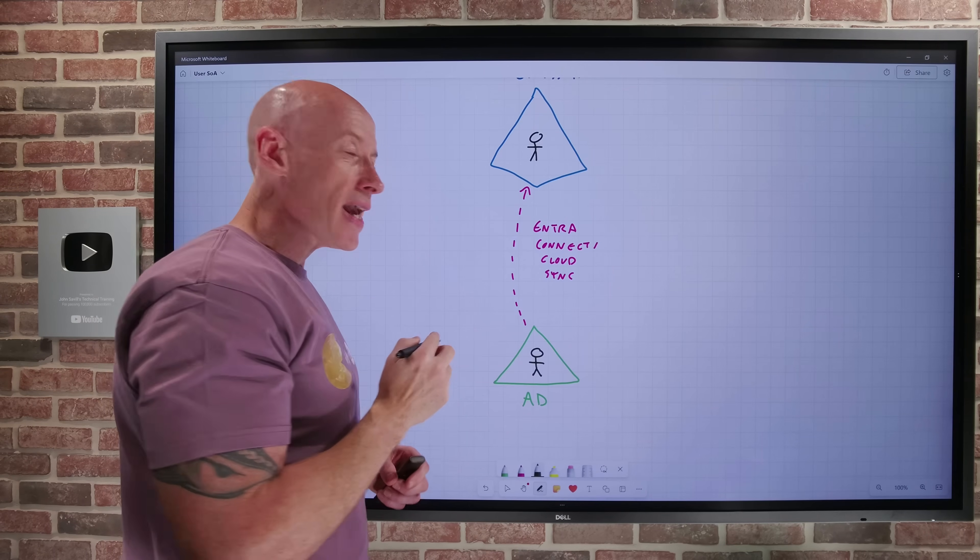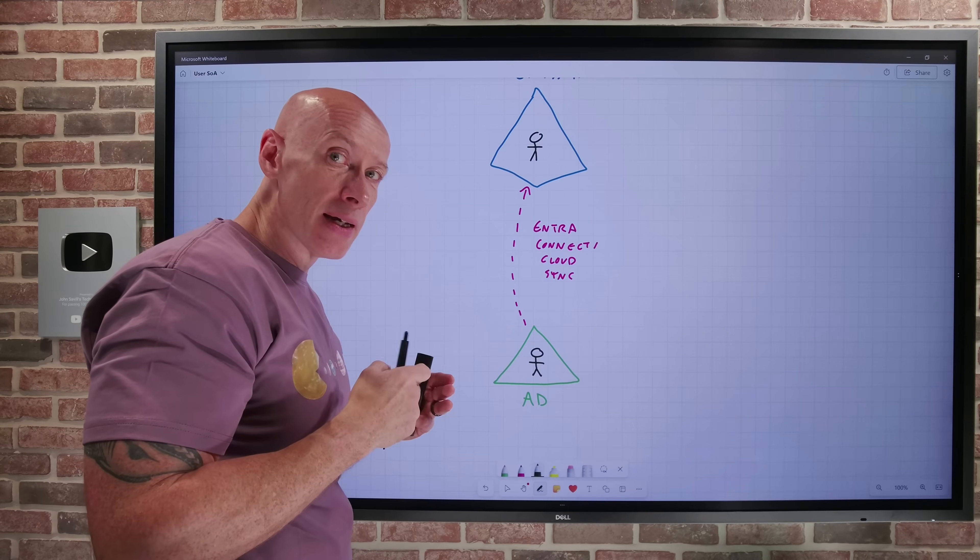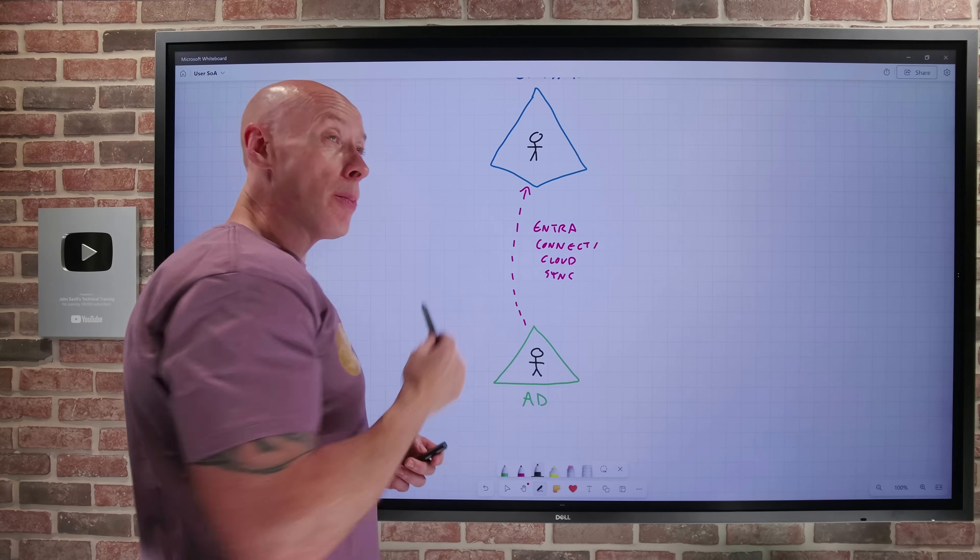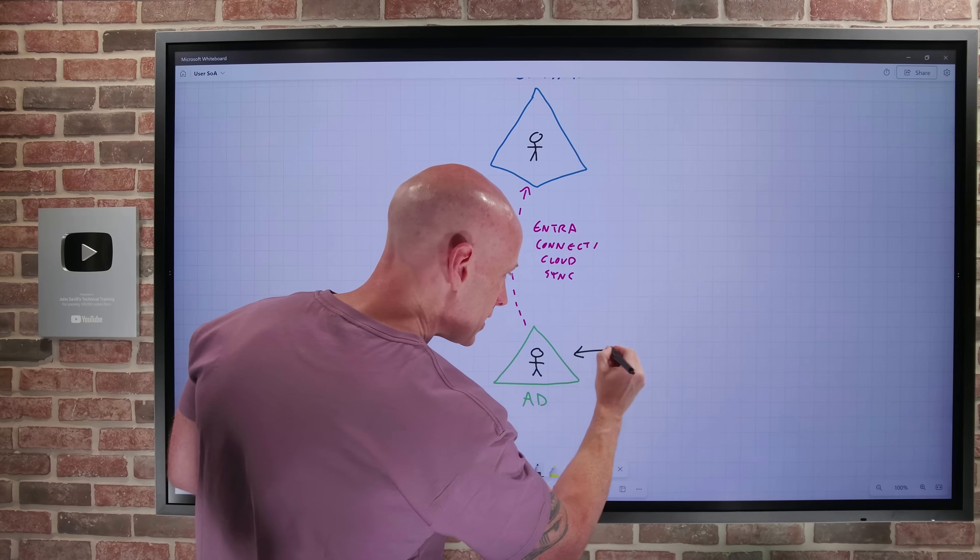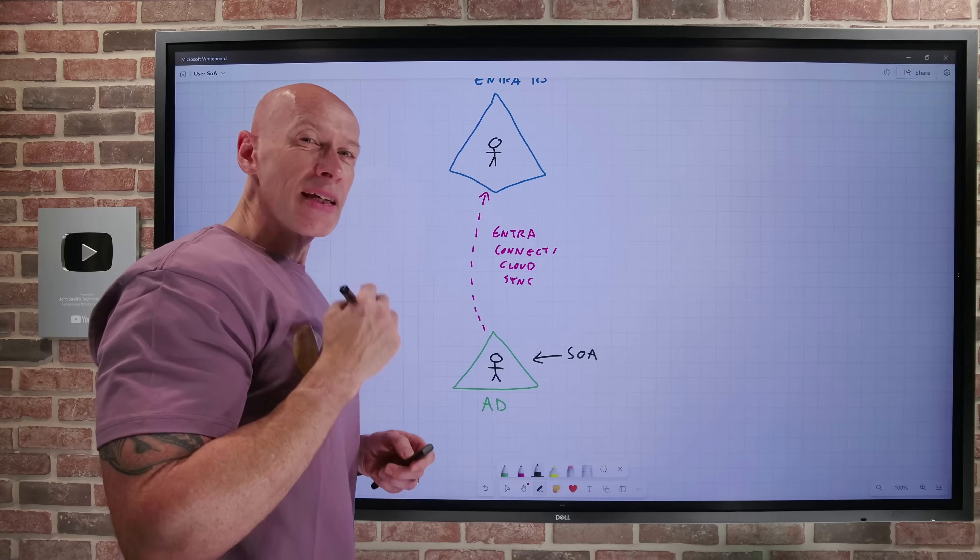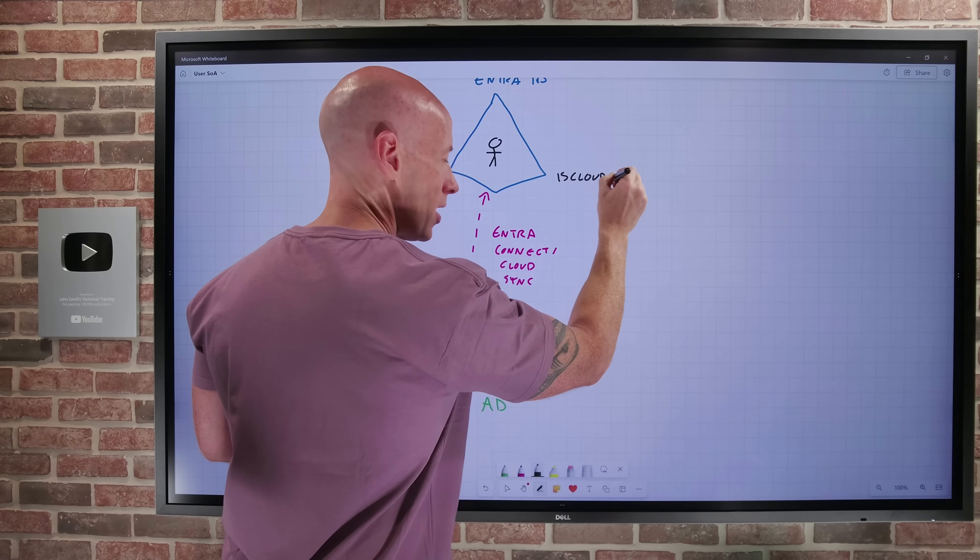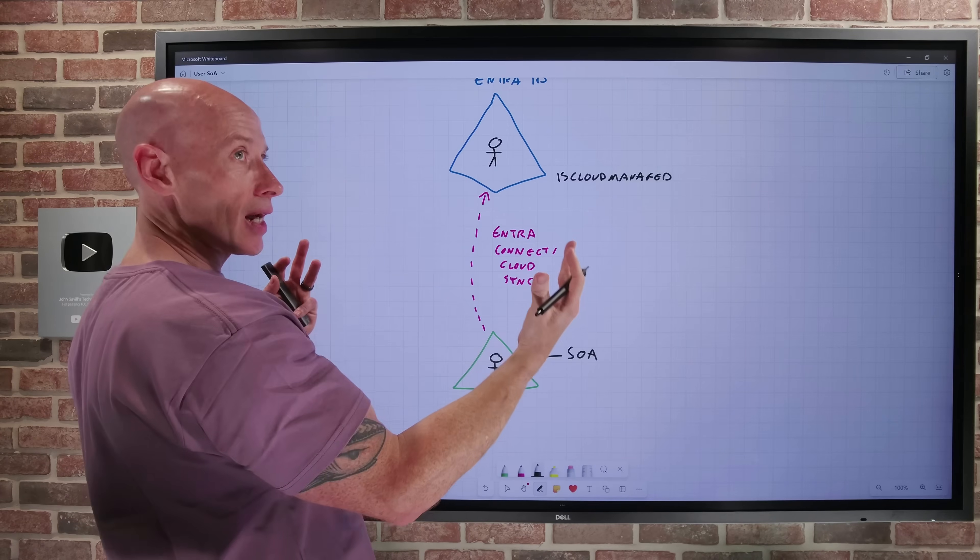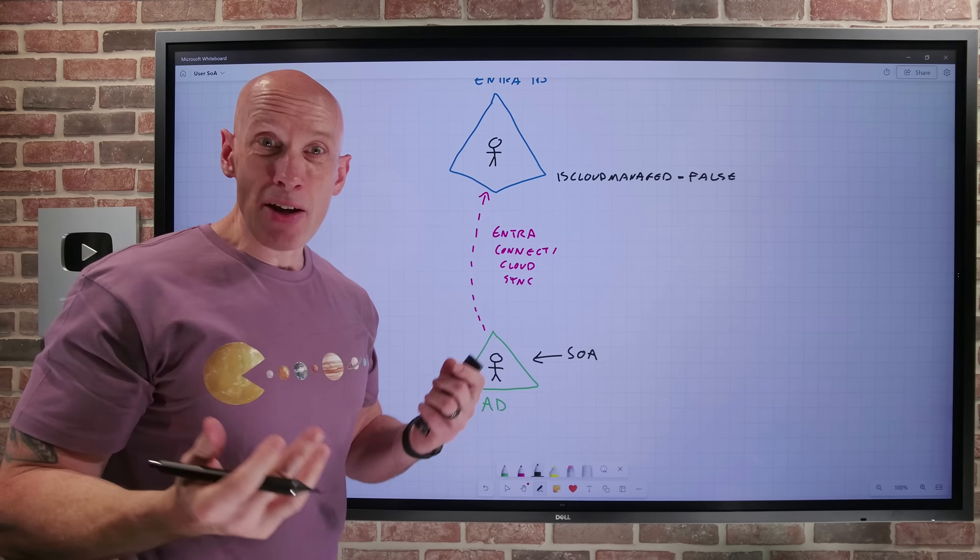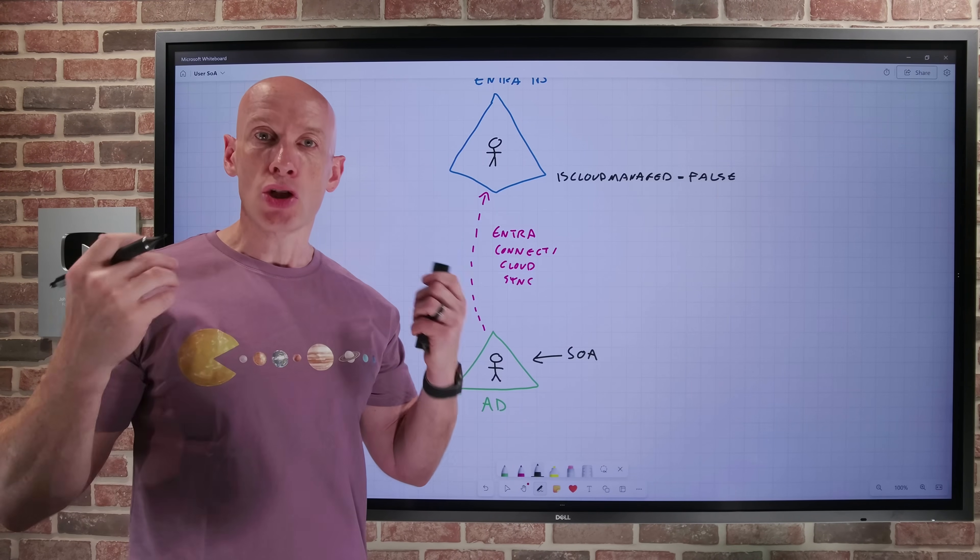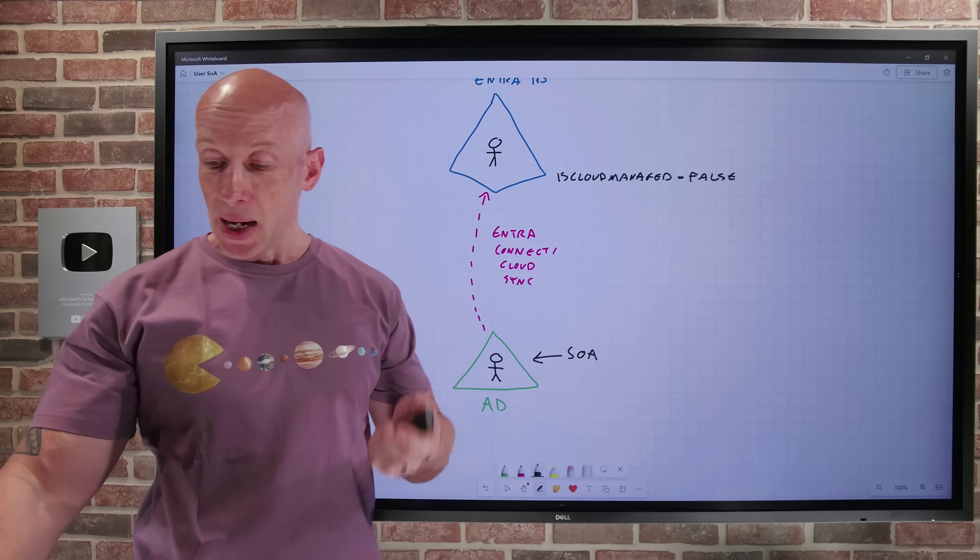But the reality is the Entra ID user, that object, has a very limited ability to be edited in Entra ID. Because there are certain attributes on this object that tell it the source of authority for that object. So the source of authority is down here. It's Active Directory. There's a couple of different attributes. The main one is there's this attribute called isCloudManaged. I.e. it originates in the cloud. It's source of authority is the cloud. And that's going to be set to false. There's also an attribute on-premises sync enabled, which would be set to true. And so any changes we want to make have to be made in Active Directory and then synchronize those up to the cloud.